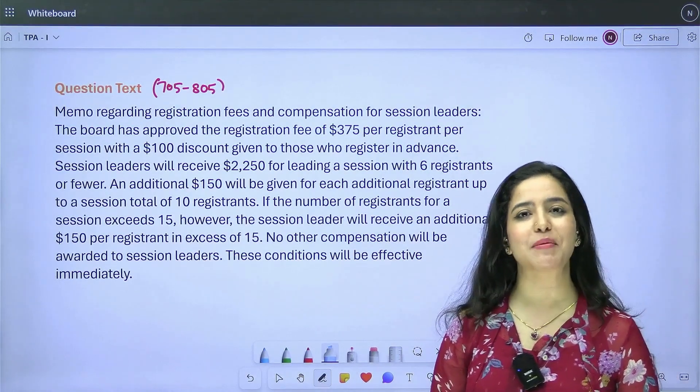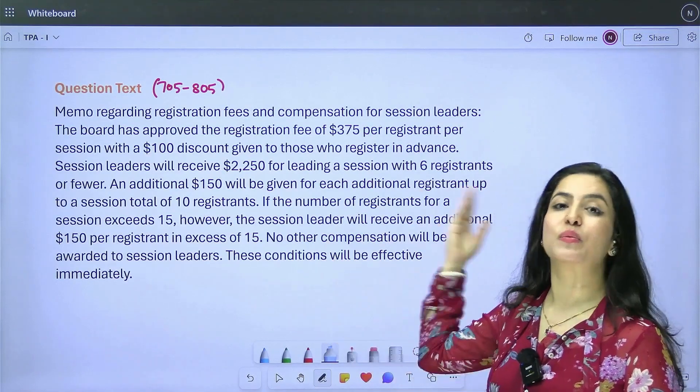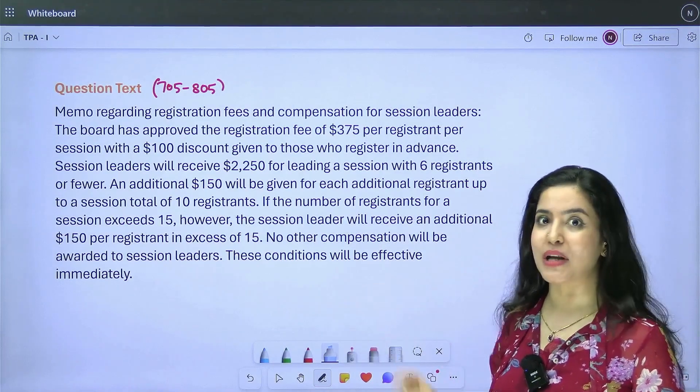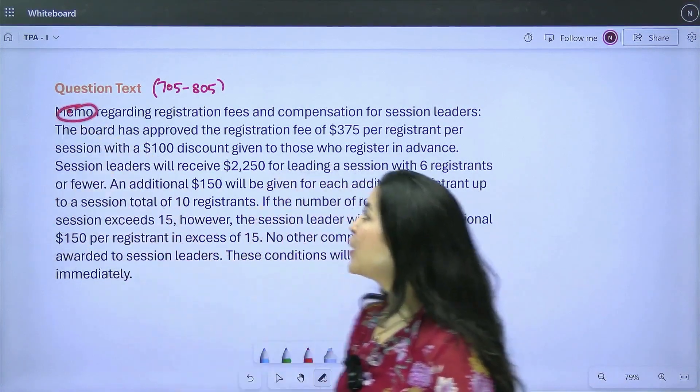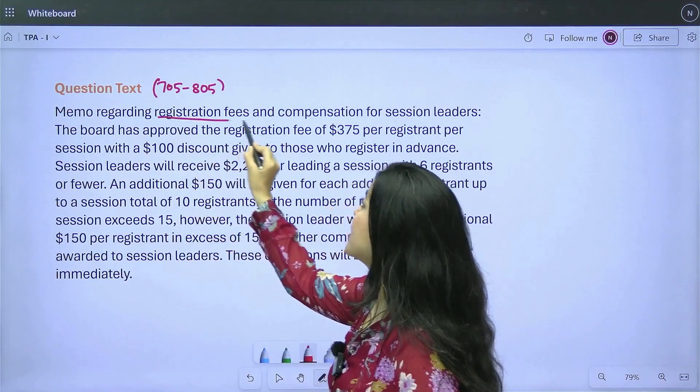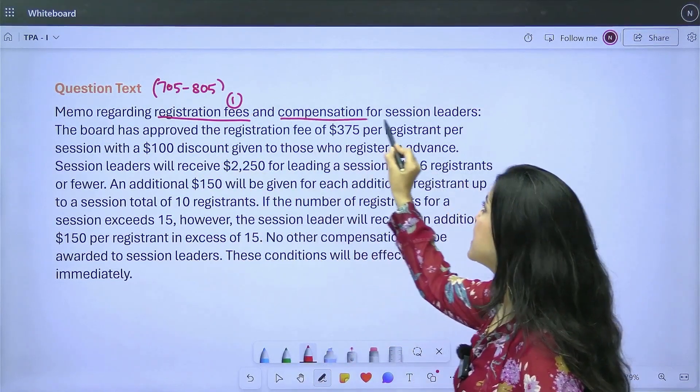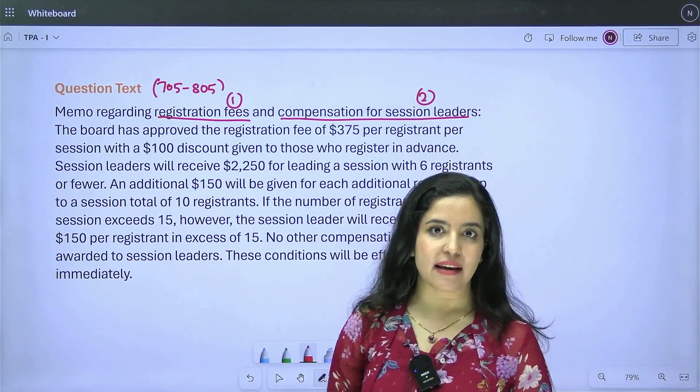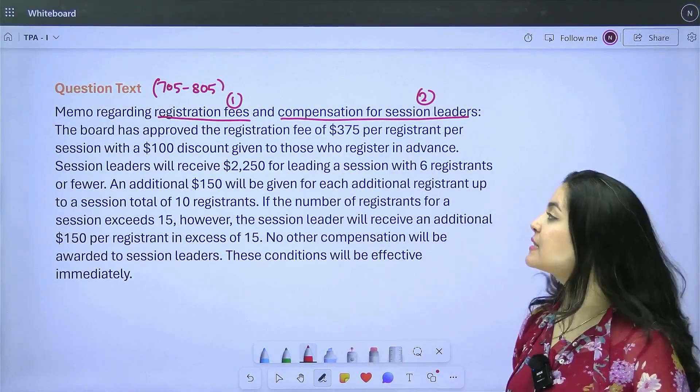What is it? First step is to understand the given information. After we understand this, we will go to what the question is asking, what the choices are and all of that. Later, first we'll understand this. Let's start reading. It talks about a certain memo which is regarding two things. What are the two things mentioned? One, registration fees. Let me number this. And the other is compensation for session leaders. Number two, these are the two things that I'm going to find more information about as I read the rest of the text. Let's start reading.